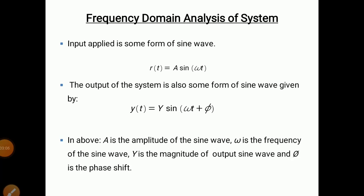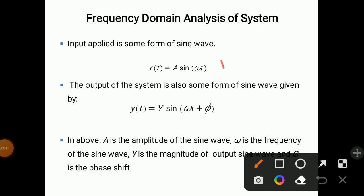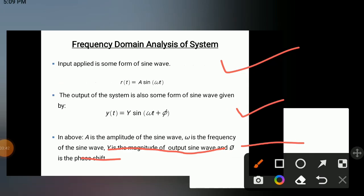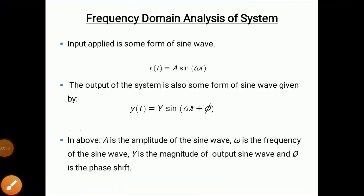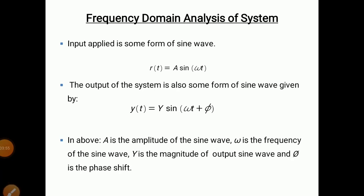The input applied is in the form of a sine wave. The standard equation for the input is r = A·sin(ωt), where A is the amplitude of the sine wave and ω is the frequency of the sine wave. The output of the system is also a sine wave, given by y(t) = Y·sin(ωt + φ), where Y is the magnitude of the output sine wave and φ is the phase shift. So the output changes from the input in amplitude and phase shift.